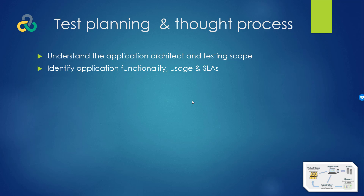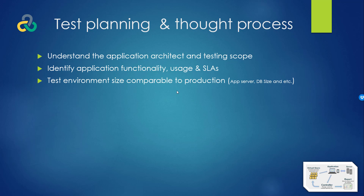Once you understand the architecture, you need to identify the application functionality — what functionality exists within the application and what is the usage pattern, how users actually use the application. This is important because it helps you figure out the workload: how to put load on the system, gradual ramp-up and ramp-down, number of active sessions. You also need to look at SLAs — if there's any agreement with the business that searches should return in three or five seconds — and gather that information.